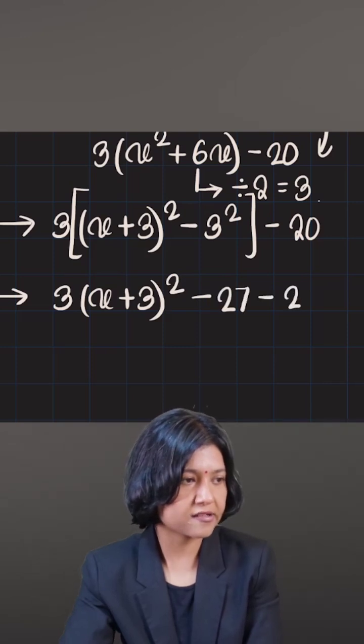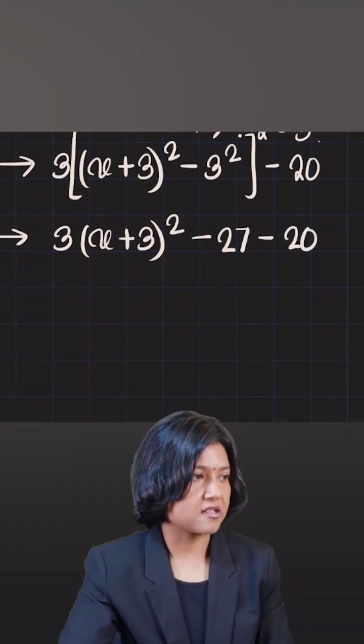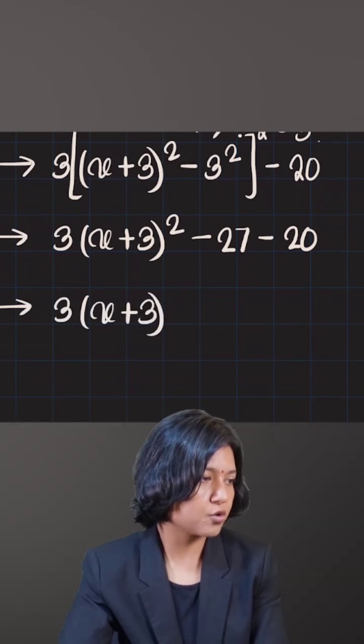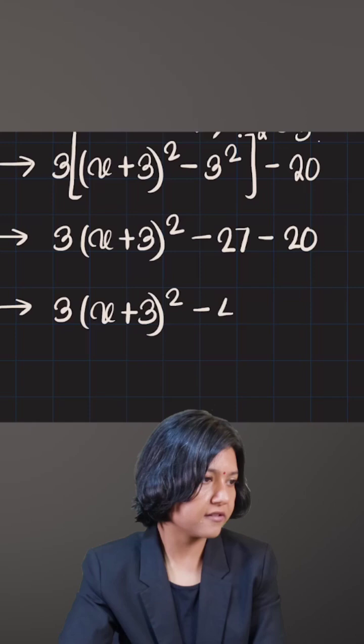So negative 27 and lastly, negative 20 remains as it is. If you look at this, 3 times x plus 3 the whole squared, you can simplify the two constants together giving you negative 47.